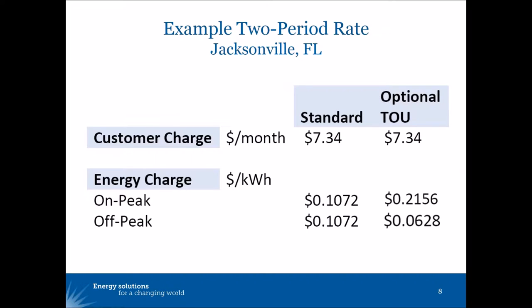This first example illustrates the difference between the standard fixed flat volumetric energy rate — the most common residential rate design in the United States — with a simple time of use rate. Under a standard rate, the residential customer pays a fixed monthly charge that does not vary with their energy use, and then a flat rate for each kilowatt hour consumed, no matter when it's consumed — in this example, 10.72 cents per kilowatt hour.